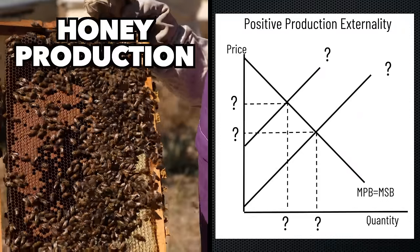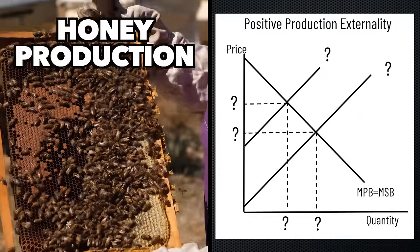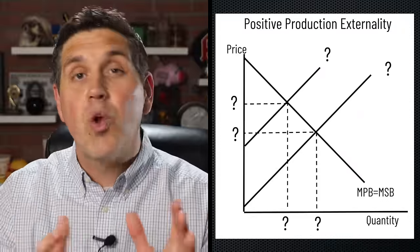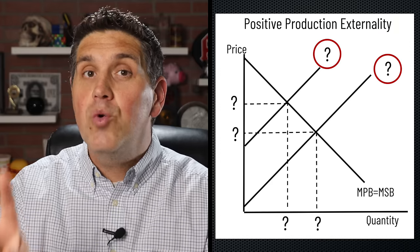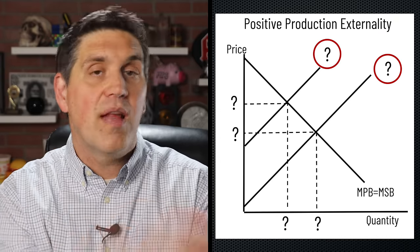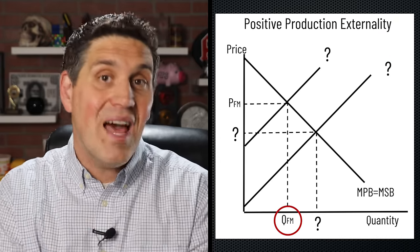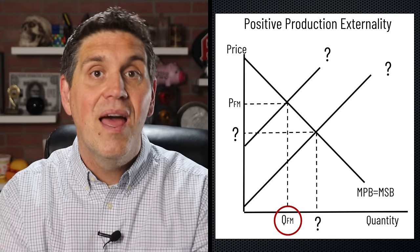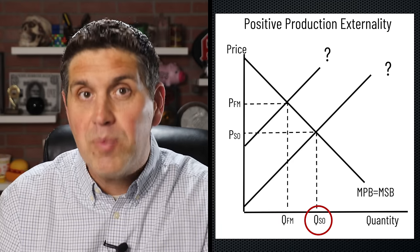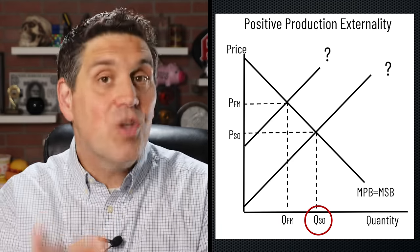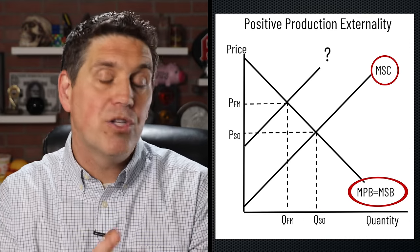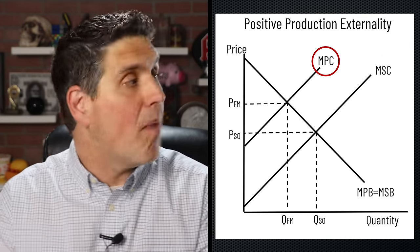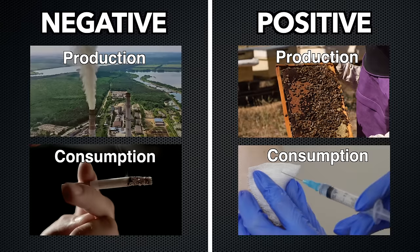What about a positive production externality — what about honey? On the production side there are always going to be two cost curves. We know the quantity to the left is the free market quantity because they're underproducing, which makes the other quantity socially optimal. If that's the socially optimal quantity, this must be where the marginal social benefit hits the marginal social cost, and the other curve must be the marginal private cost. There we go — four different graphs showing four different situations.